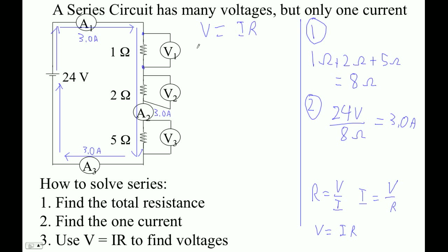So here we go. We've got 3 amps times 1 ohm. So that's 3.0 volts. And then this guy is IR as well. So it's 3 amps times 2 ohms. So that's 6.0 volts.